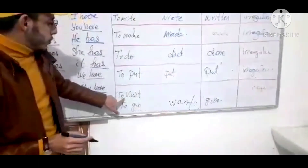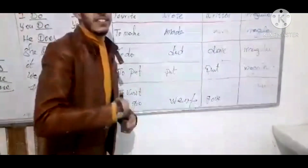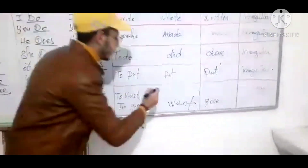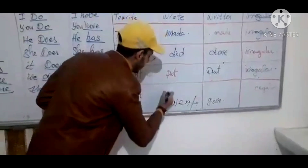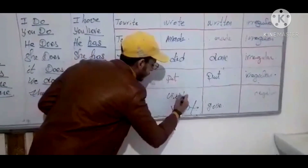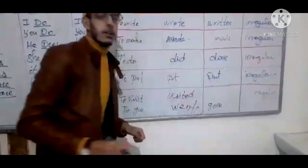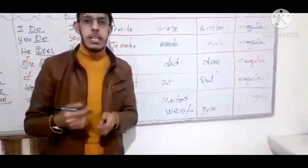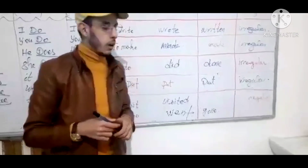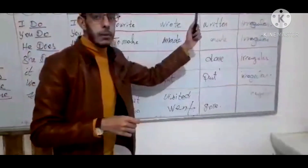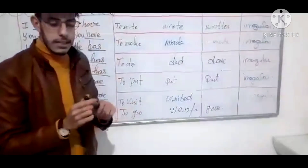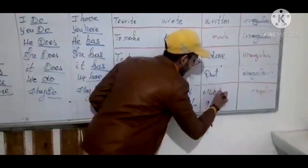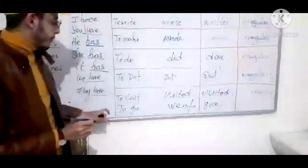Now let's go to 'to visit.' To visit, visited — because it's a regular verb. For example, last year I visited Paris. Last year I visited my grandma. For a regular verb, the past participle is the same as the past: visited. It's a regular verb.